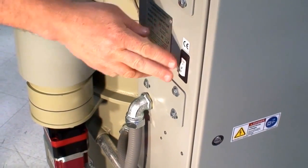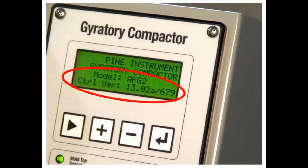The model number and the software control version come up on the first screen. If you have control 13.02a or greater, you do not need to do a software upgrade. If you do need to upgrade the software, use the following procedure.